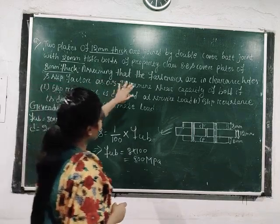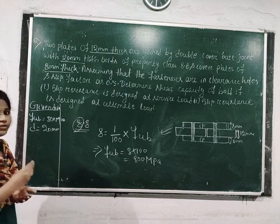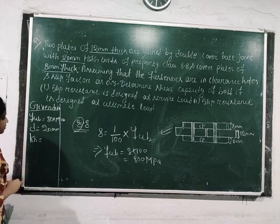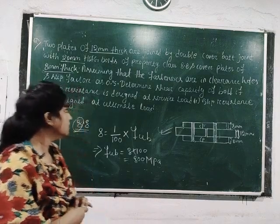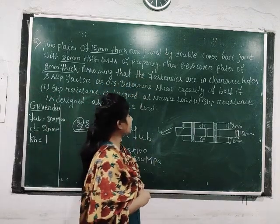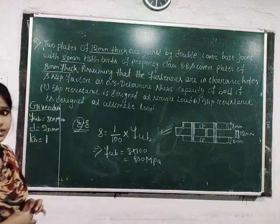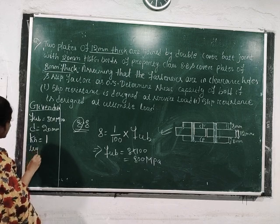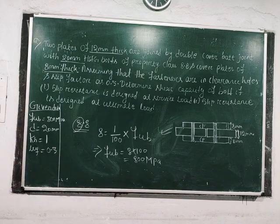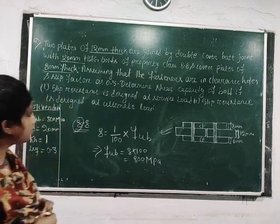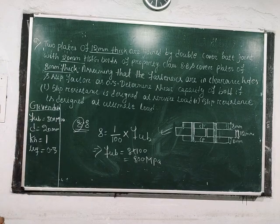Assuming that the fasteners are in clearance holes — this gives the condition for the value of KH. For fasteners in a clearance hole, the value of KH is 1. You can refer to clause 10.4.3 to get the value of KH for different conditions. The slip factor is given directly as 0.3. We are asked to determine the shear capacity of the bolt when slip resistance is designed at service load, and when it is designed at ultimate load.